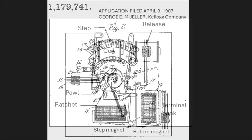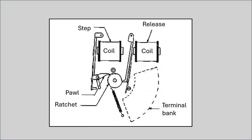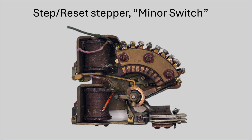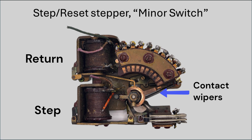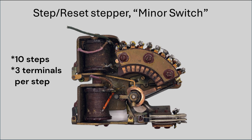The patent provides figures and explains operations. We see the step-and-return electromagnets, the pawl and ratchet, and the stationary bank of terminals. Here is a real version faithful to Mueller's original concept. There are two electromagnets: one magnet rotates the wipers one step at a time, and the other returns the wipers to a home position in one quick step. The wipers make contact with stationary rows of terminals at each position. This version has 10 steps and 3 terminals per step.